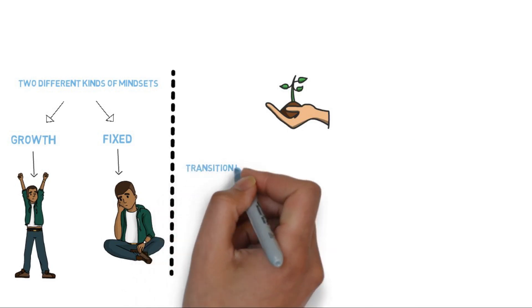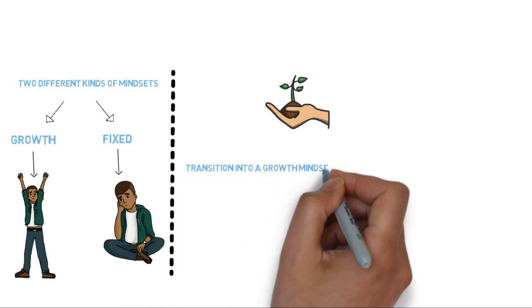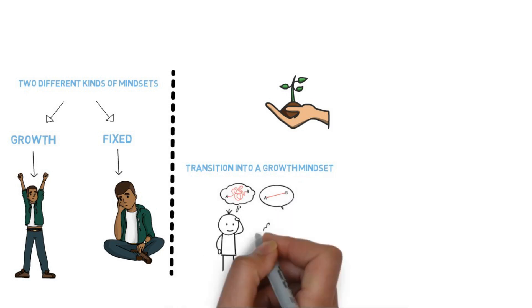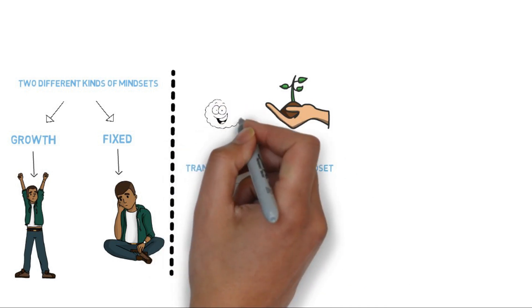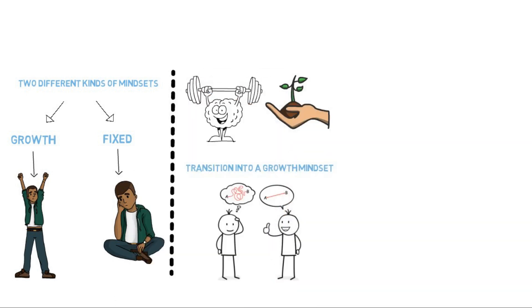To transition into a growth mindset, you have to ask yourself to determine what you want to achieve in your life specifically. This leads to asking yourself how you are going to get from point A to point B, or rather, how you are going to change your fixed abilities to reach your goal. Making this subtle shift in thinking begins to transform your mindset from a fixed state into a growth state.